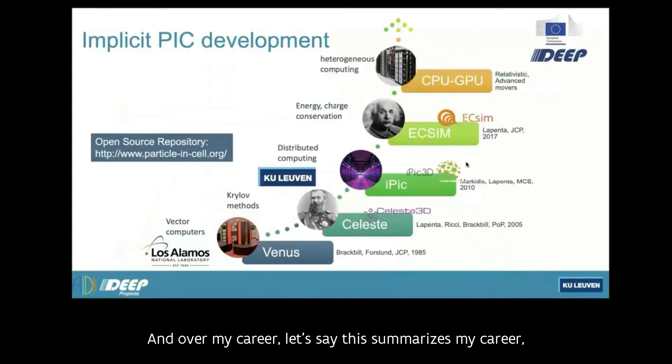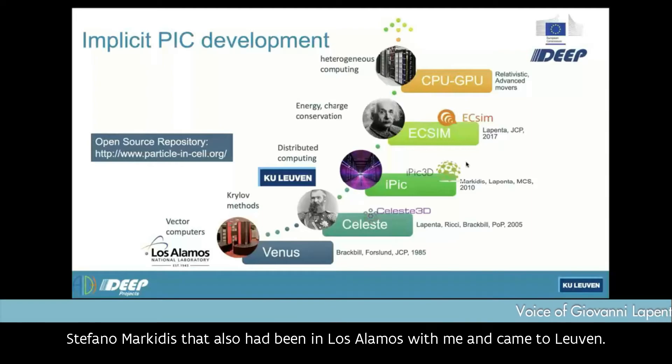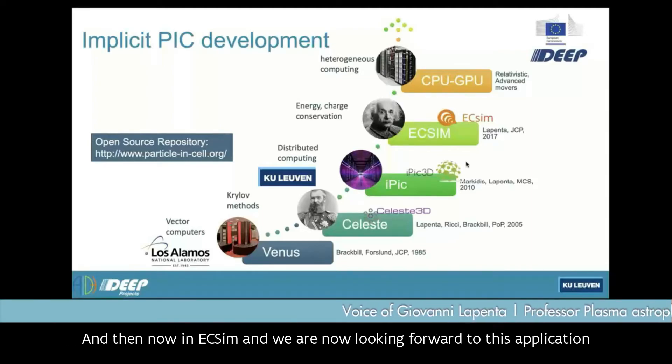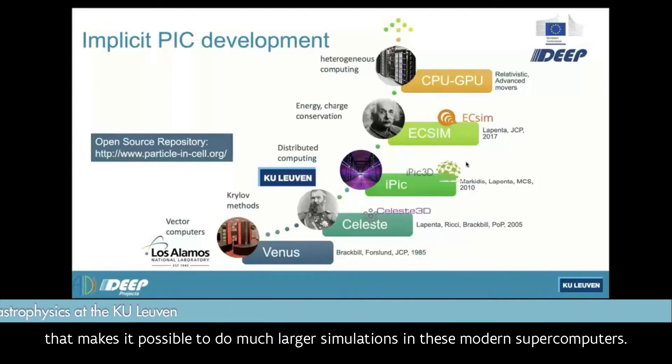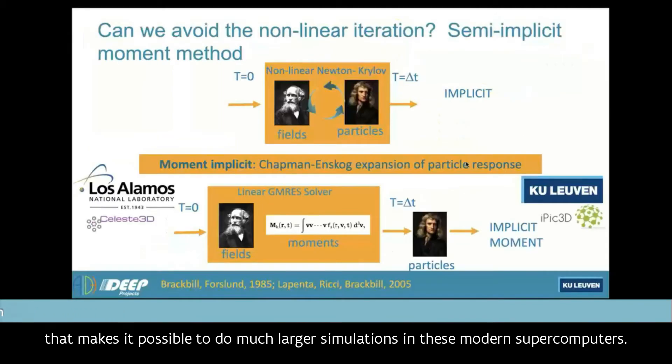Of course, that's very costly. And over my career, this summarizes my career. I've been always working in making this progressively more efficient. This work started with the implicit moment method that was developed at Los Alamos by Brackbill and Forslund. And then I worked at Los Alamos for 15 years. And when I was there, I developed Celeste. And then I started to develop iPIC3D, but then I moved to Leuven. And iPIC3D was developed in Leuven by myself and my postdoc at that time, Stefano Markidis, that also had been in Los Alamos with me and came to Leuven. And then now in Ecsim, and we are now looking forward to this application to machines like Lumi for the CPU and GPU.